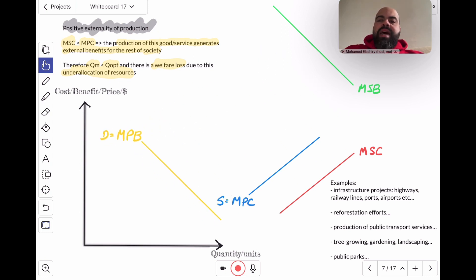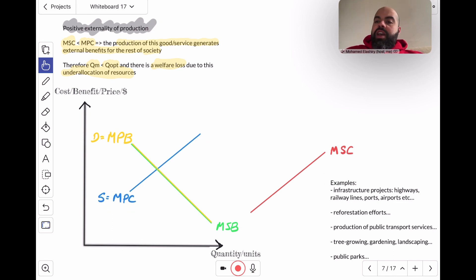So on the demand side, the MPB and the MSB line, just imagine that they are one curve, that's D equals MPB equals MSB. On the supply side, there are two positively sloping curves. There is the supply curve, which is the MPC and the MSC. But the MSC is lower than the MPC.